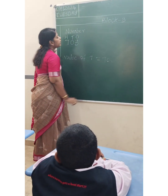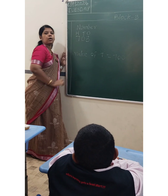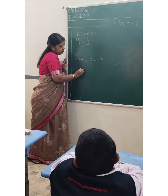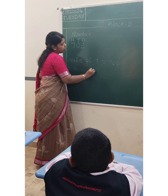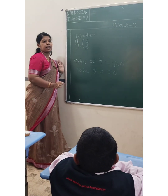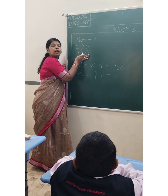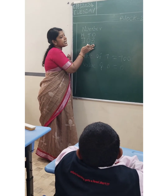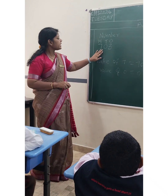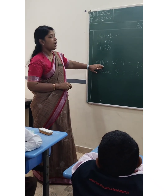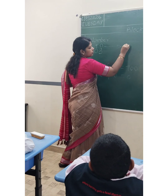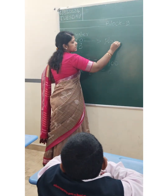If I ask the value of 0? 0. Very good — value of 0 is 0. If I ask value of 3? 3, because it is in 1's place. It is in 1's place. These are your values, and these are your places.